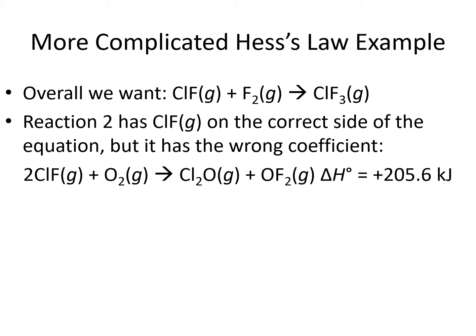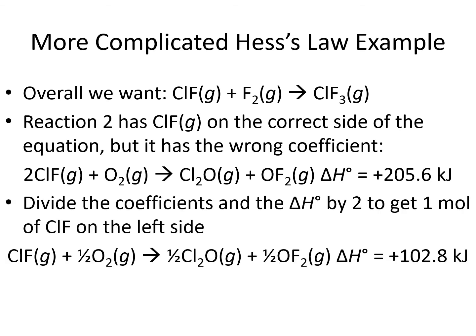Since the coefficients don't match, we're going to have to multiply or divide our equation by some number and do the same thing to our delta H. Since our step equation has a 2 and we're trying to get it to be a 1, we're going to divide the whole equation by 2 — not just the ClF, but everything. 2 divided by 2 gives us 1 for the ClF; 1 divided by 2 gives us 1/2 for the O2 molecule; 1 divided by 2 gives us 1/2 for the Cl2O; and 1 divided by 2 gives us 1/2 for the OF2. Step equation number 2 had a delta H of positive 205.6, and dividing by 2 gives us positive 102.8 kilojoules for the manipulated step number 2.